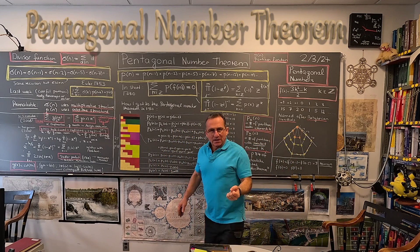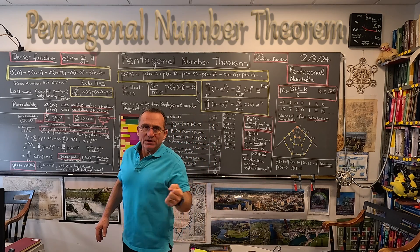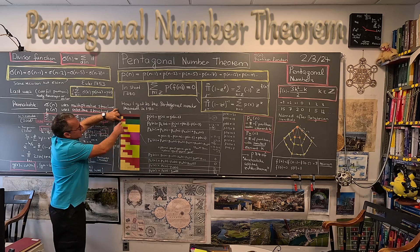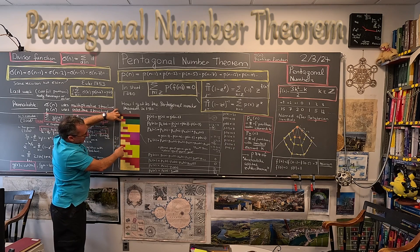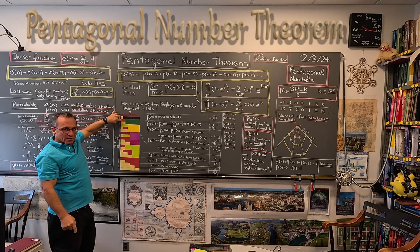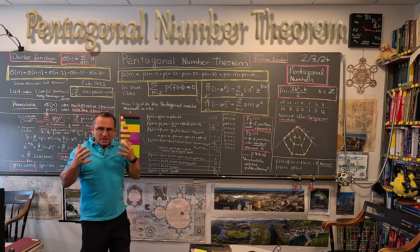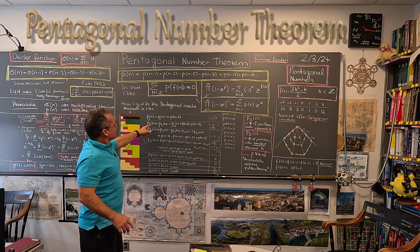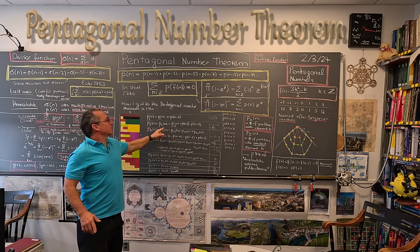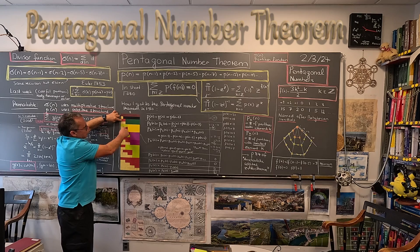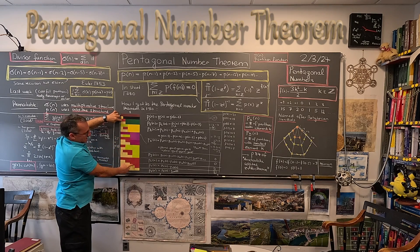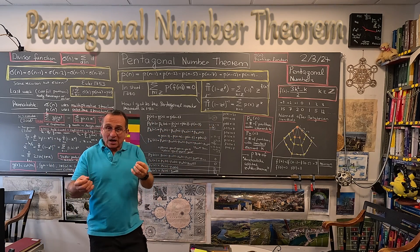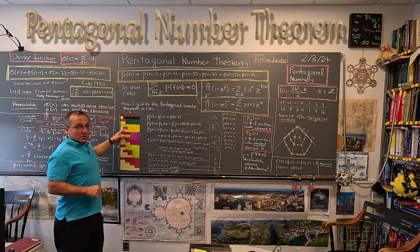Now we count the partitions where 2 is the smallest element. There are four such partitions. To count them: there are 11 partitions where 2 appears, but we have to subtract those where 2 is not the smallest — where 1 appears as well.